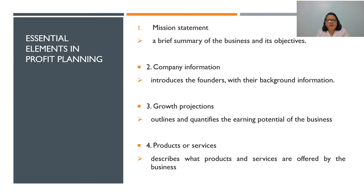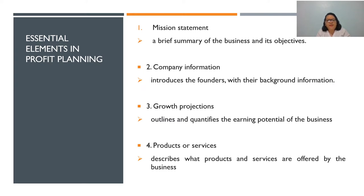The essential elements of profit planning: Number one, the mission statement — it indicates a brief summary of the business and its objectives. Number two, company information — it introduces the founders and their background. Number three, growth projections — it outlines and quantifies the earnings of the business. Number four, products or services — it describes what products and services are offered by the business.